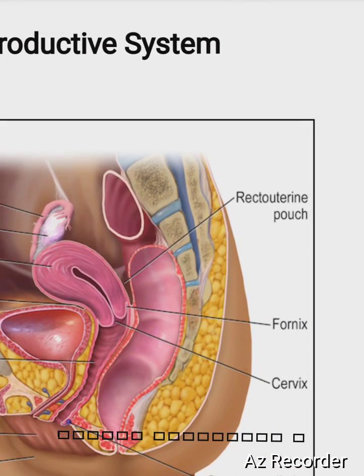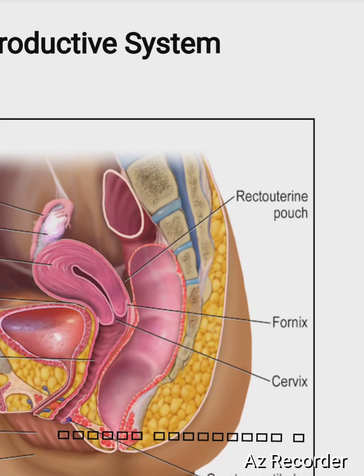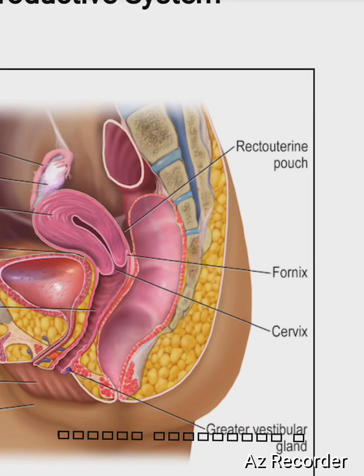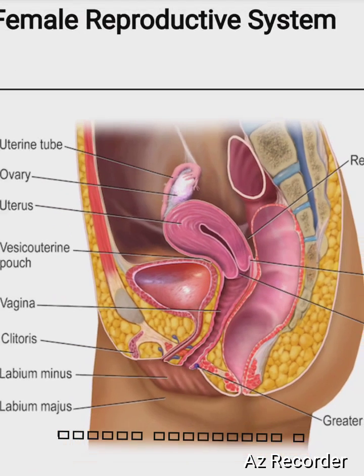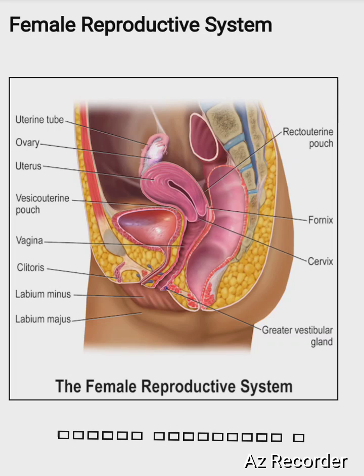On the other hand, this part of the reproductive system of the female is the fornix. This part is called the fornix, this part is called the cervix, and this part is called the greater vestibular gland. In this video I will tell you about the female reproductive system.